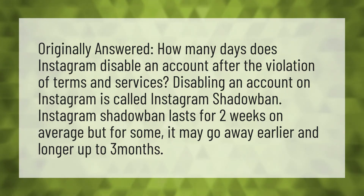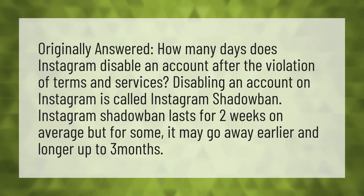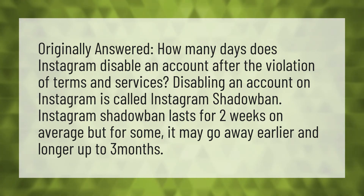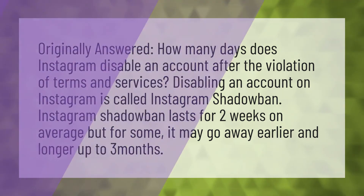Disabling an account on Instagram is called an Instagram shadow ban. An Instagram shadow ban lasts for two weeks on average, but for some it may go away earlier, and for others it can last longer — up to three months.